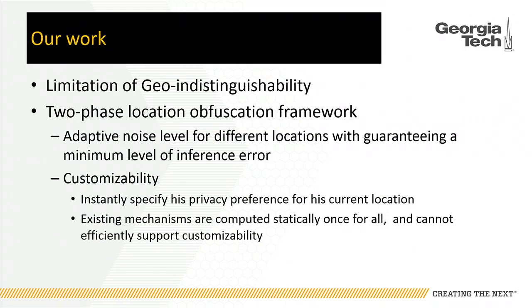Our work studies the limitation of geo-indistinguishability and proposes a two-phase location obfuscation framework that incorporates prior information into the geo-indistinguishability mechanism, achieving adaptive noise levels for different locations with a guaranteed minimum level of inference error. We also want customizability — allowing users to specify different privacy requirements for different locations, a feature not well supported in existing mechanisms.